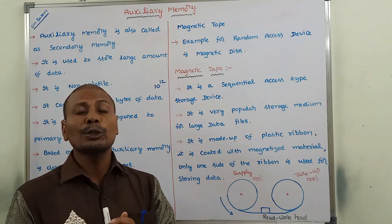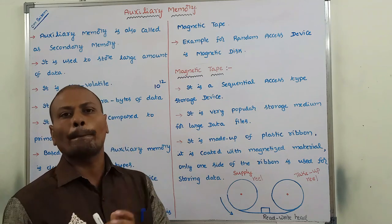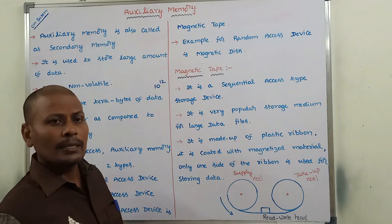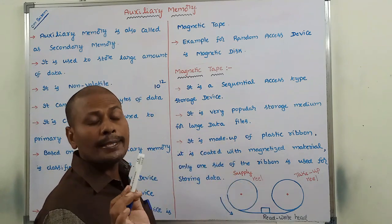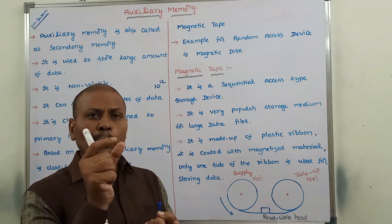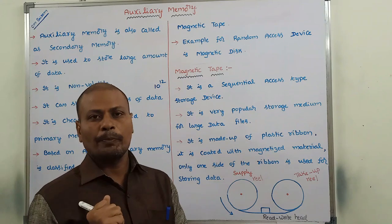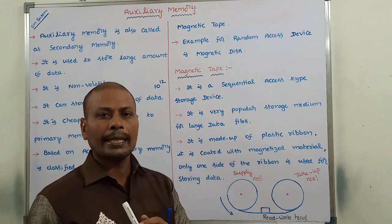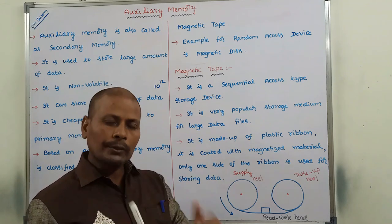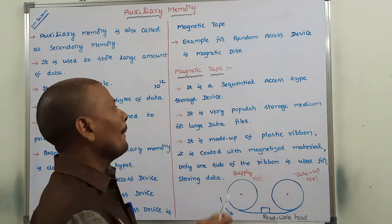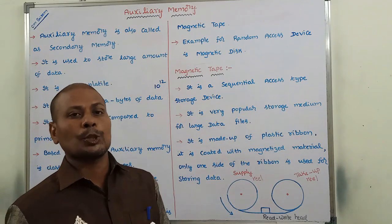We also store data into the magnetic tape in a sequential manner. Suppose in this tape there are five sounds stored, and we want to access the fourth sound — we cannot access it directly. To access the fourth sound, first we access the first sound, then the second, then the third, and after that the fourth sound becomes accessible. That is why magnetic tape is a sequential access storage type device.